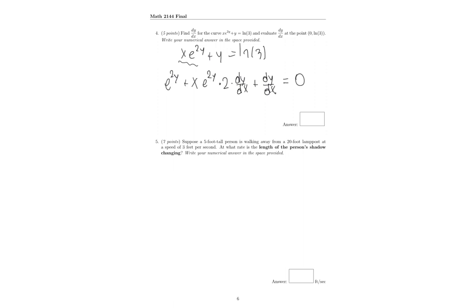So from here, what we can do is we're going to solve for dy/dx. So I'm going to move this e to the 2y to the other side. So we'll have x e to the 2y, I'll say 2x. I'll just put this 2 over there. e to the 2y dy/dx plus dy/dx equals negative e to the 2y. And then I can factor out my dy/dx of 2xe to the 2y plus 1 equals minus e to the 2y. And then I can divide over.